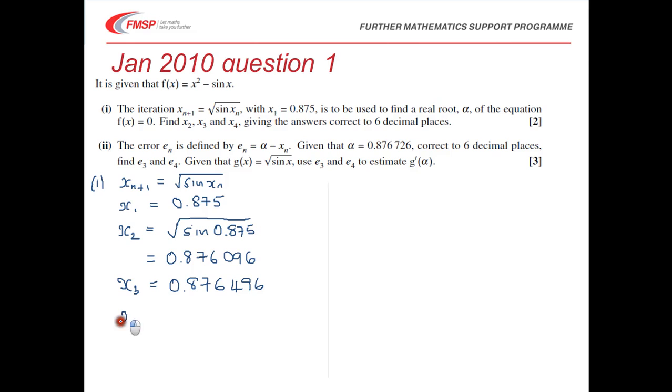And then x_4, which is 0.876642. So we have just two marks for doing that.